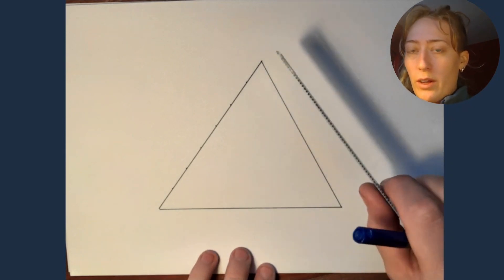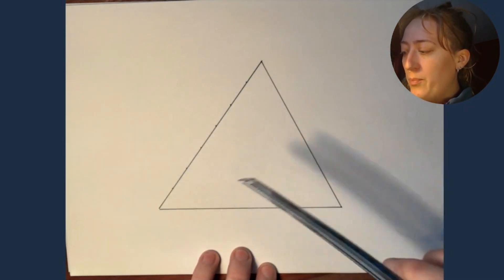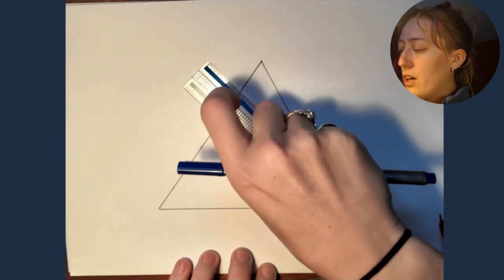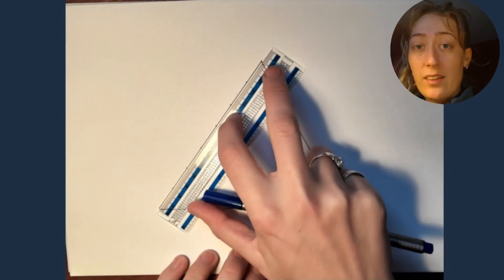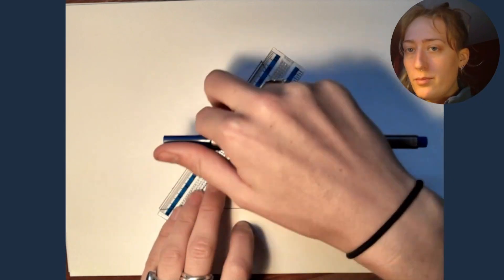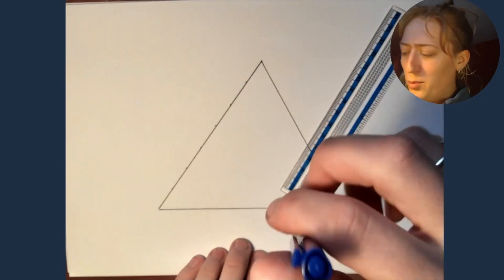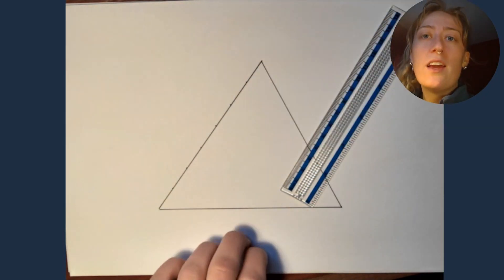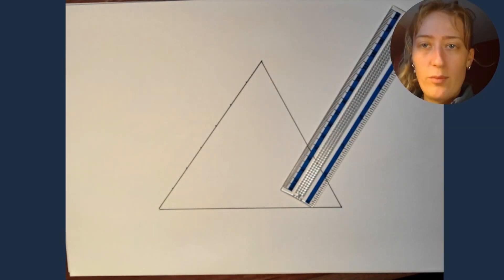What I've also done, if you look quite closely, you might notice that I've got little dots here, because using my ruler I went along and split this side of the triangle into seven equal parts. You can do eight, you can do ten — it doesn't matter.